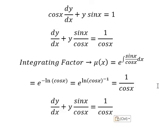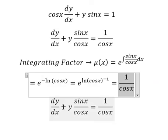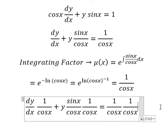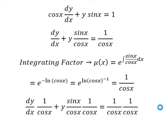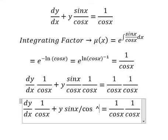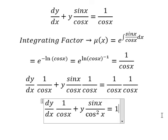That means we multiply both sides by this one. So this one, we have sine x over cosine x. Similar for this one.